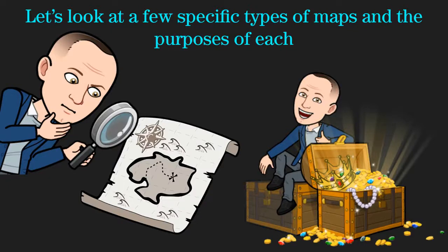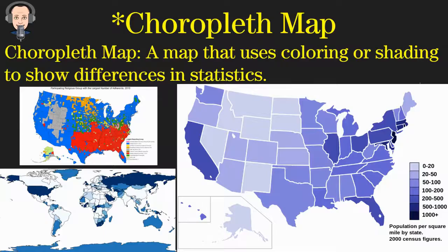Hi guys, I wanted to go through what you're going to see on the next few slides. I will leave the slides up for you so that you can go through at your own pace and look at some of the things more closely. But a few of these things I thought were worth going through together. This first map is called a choropleth map. A choropleth map is a map that uses coloring or shading to show differences in statistics.